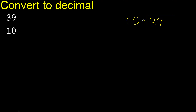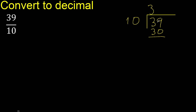10 multiplied by which number is nearest to 39 but not greater? Multiply by 4 is 40 — 40 is greater. Multiply by 3 is 30 — 30 is not greater, ok.